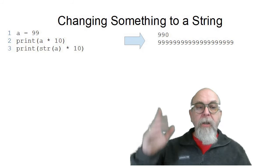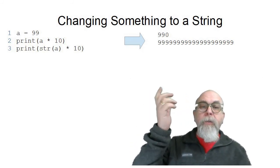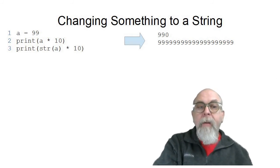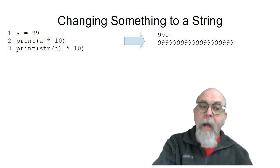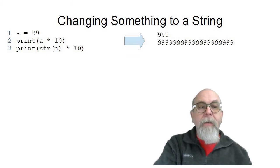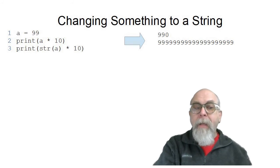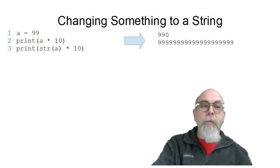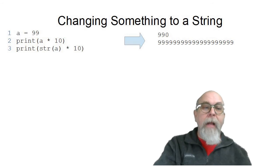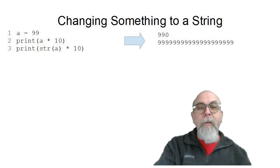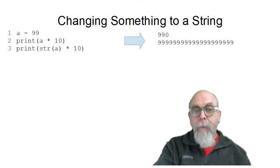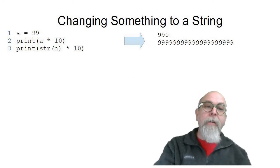Here you can see the str function in a simple program. The first line sets the variable a equal to the integer 99. The second line prints a times 10, which would be 990. But if we convert it to a string, str(a) times 10 would repeat the string 10 times. That's why it printed 20 nines instead of 990 — because it converted the integer 99 to the string '99', and then repeated that string 10 times, giving us 20 nines.